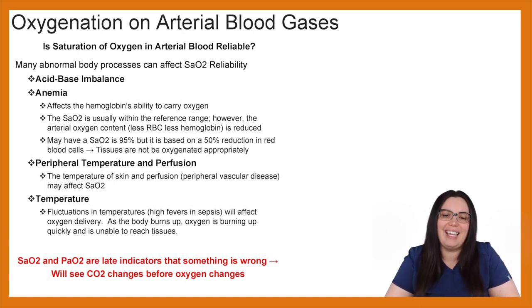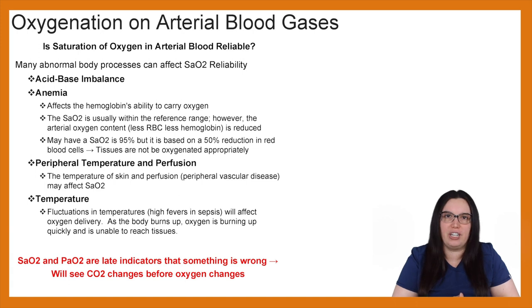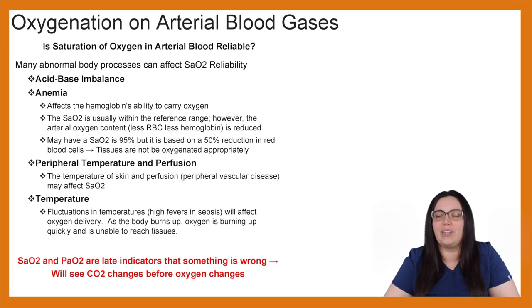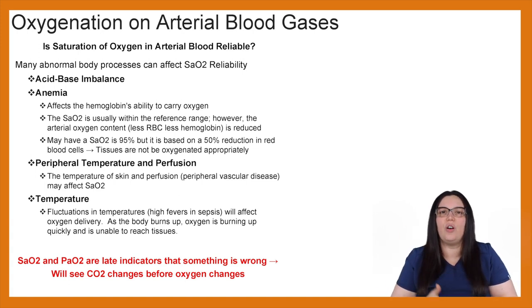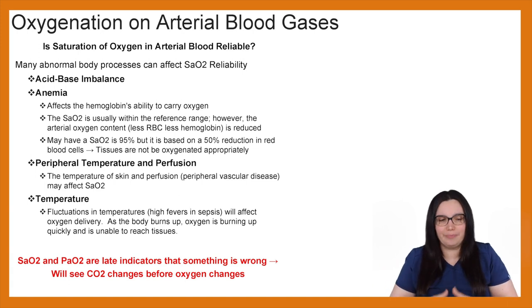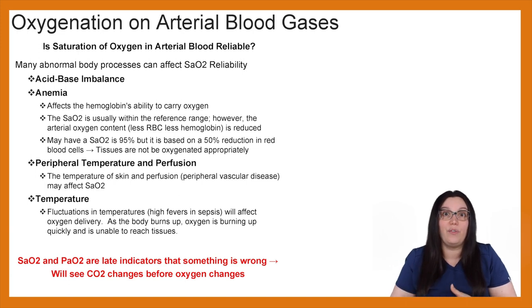SAO2 and PaO2 are late indicators that something is wrong — you're going to see carbon dioxide changes well before you see oxygenation changes in those two values. I highly recommend, especially with an at-risk population, putting them on a CO2 detector. It can be on the finger, or if they're mechanically ventilated, it's attached to that. It lets us know what CO2 they are exhaling. Someone could have a 95% saturation of oxygen but a CO2 of 65, because the body is trying to compensate. Use the detector to catch underlying causes well ahead of changes in SAO2.